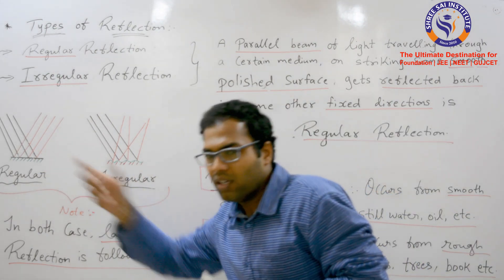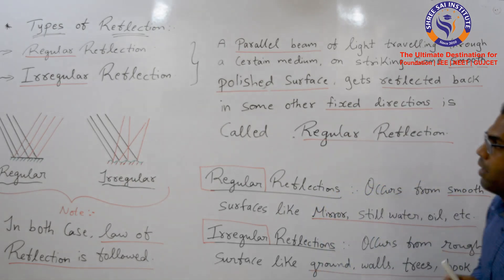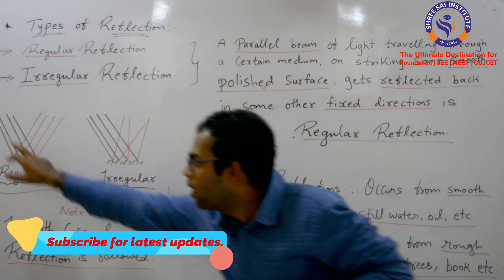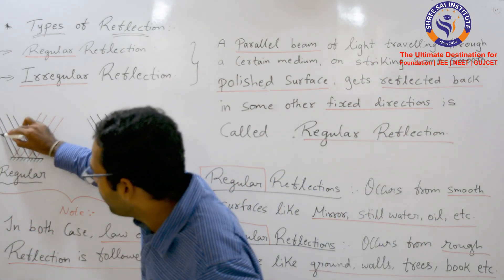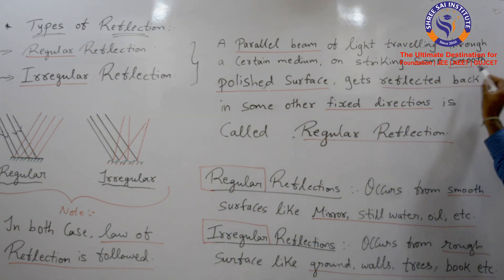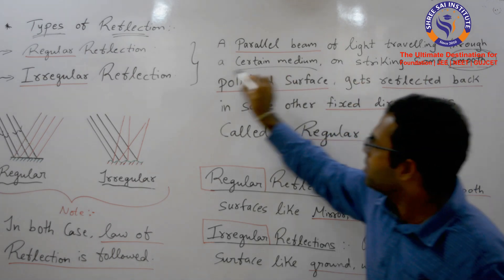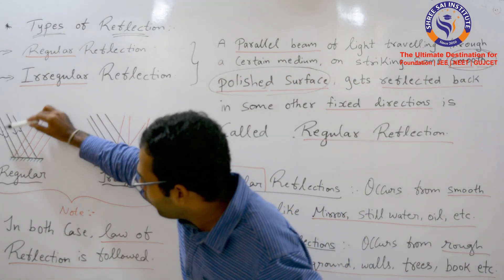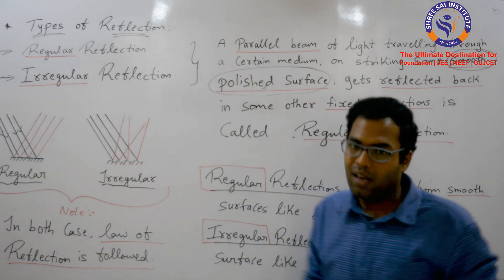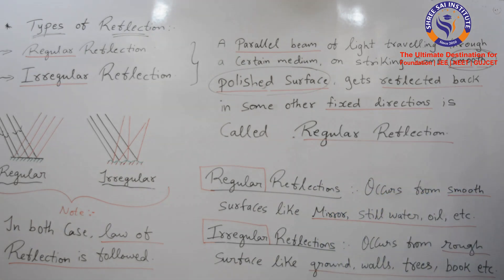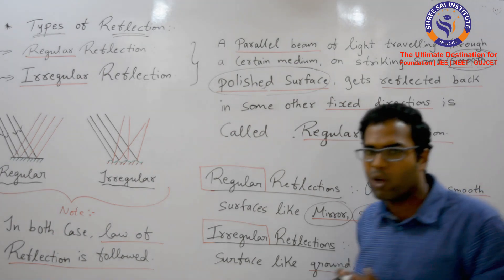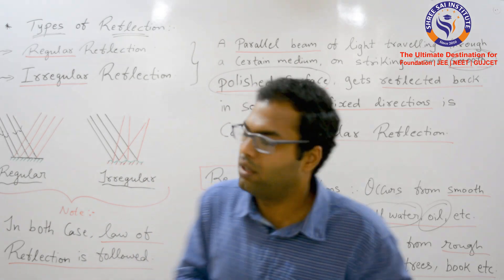Let's start with the scientific definition. A parallel beam of light traveling through a certain medium and striking some smooth polished surface — when a number of parallel rays are incident on a smooth polished surface, like tiles, mirrors, steel, water, oil, etc., regular reflection will follow.